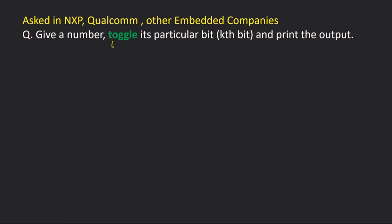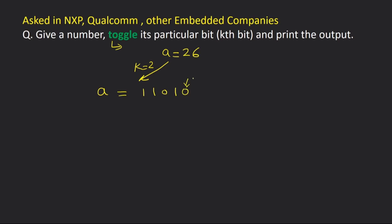So what does toggle mean? Let's say we are given a number a having value 26 and k equal to 2, because we have to work on the bits. Let's convert 26 into binary: a = 26 can be written as 1 1 0 1 0. We will consider the rightmost bit as the first bit, the next as second bit, third bit, and so on.